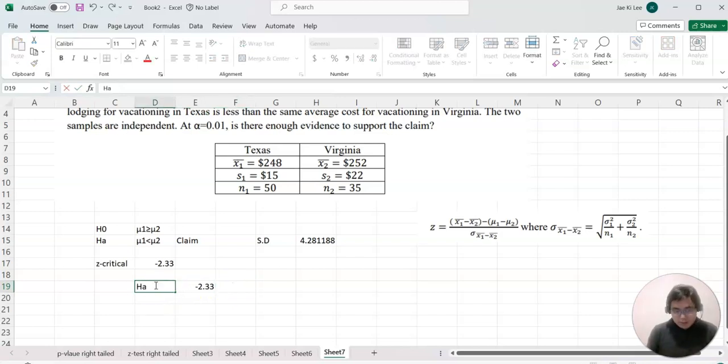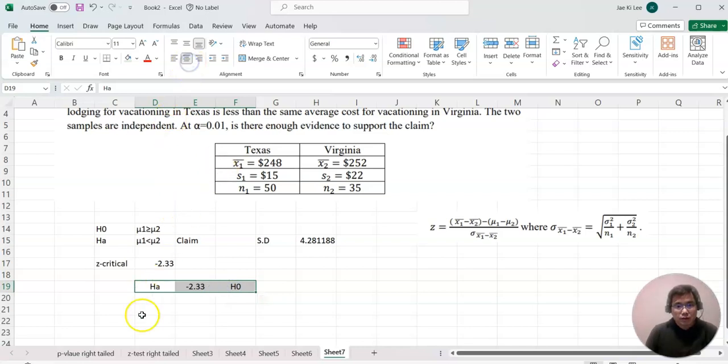Based on negative 2.33, the left side becomes HA and the right side becomes H0. I'm going to make a different color here: HA is green and H0 is yellow.